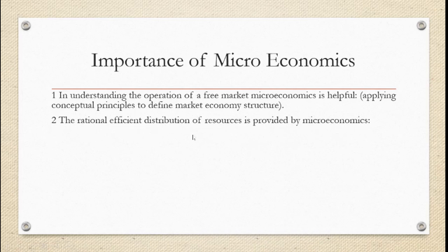The second point is rational efficient distribution of resources provided by microeconomics. If you have a person or company, the most important thing is that resources are limited — not unlimited. So these limited resources need to be distributed in the best and optimum way. Microeconomics has many concepts related to efficient allocation of resources, which allows us to achieve effectiveness.